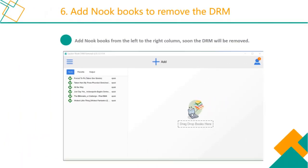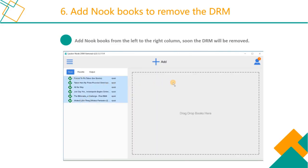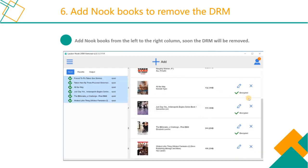Step 6: Drag and drop the Nook books from the left to the right main window. The Nook DRM will be removed successfully.